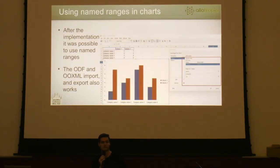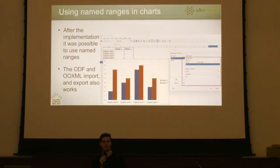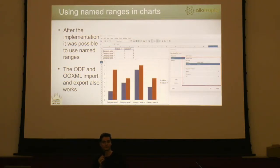As you can see, it is now possible to use named ranges and database ranges in charts. Also, the ODF and OXML filters are working, so there won't be any data losses. Of course, you can only use valid named ranges or database ranges. Otherwise, the text box of the data range will be red just like before. You can use database ranges as well.